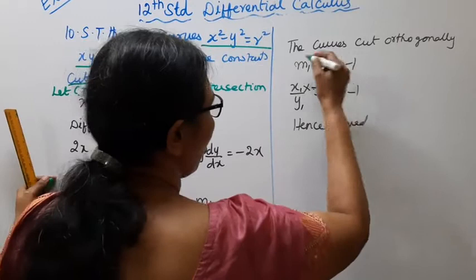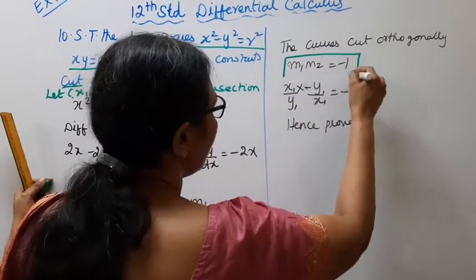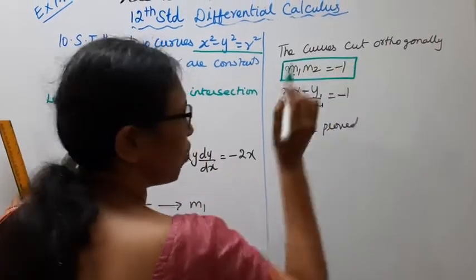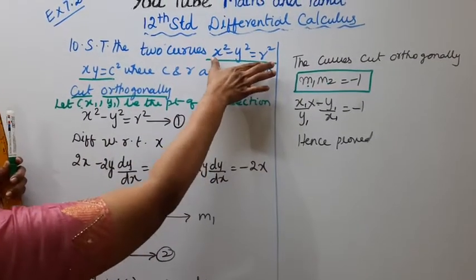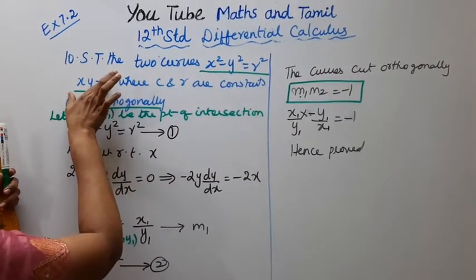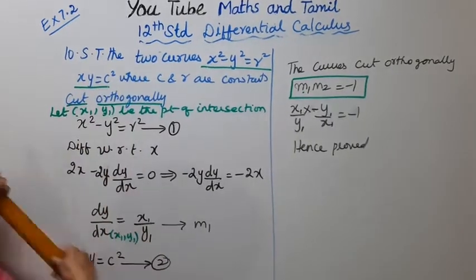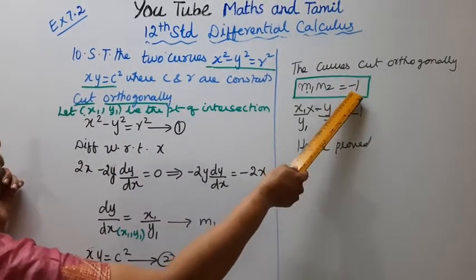The curves cut orthogonally, condition is m₁m₂ equal to -1. This is m₁, this is m₂. And the two multiply for the answer is -1.